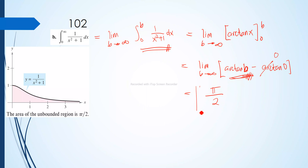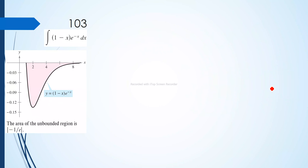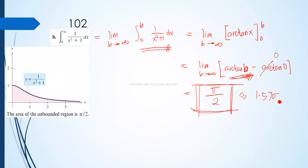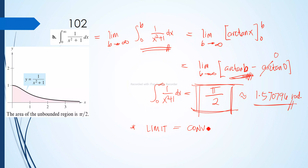At large values of b, the limit of arctan(b) as b approaches positive infinity equals π/2, or approximately 1.5708 radians. Since we have a particular solution of π/2 for the integral of 1/(x²+1) dx from 0 to positive infinity, the function has a limit and therefore the improper integral converges. The graph shows the function 1/(x²+1) and the area of the unbounded region equals π/2.